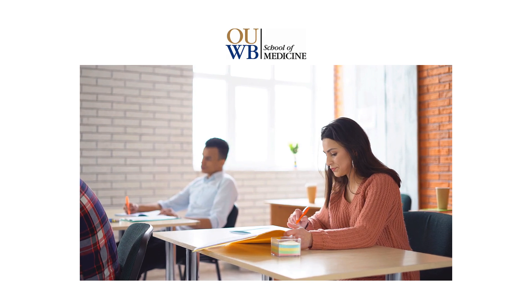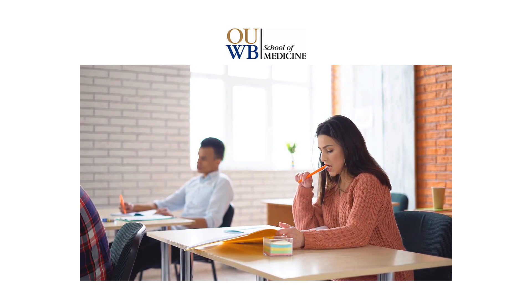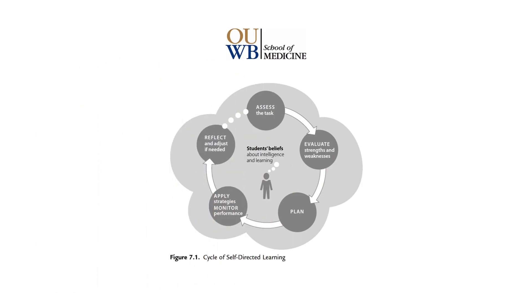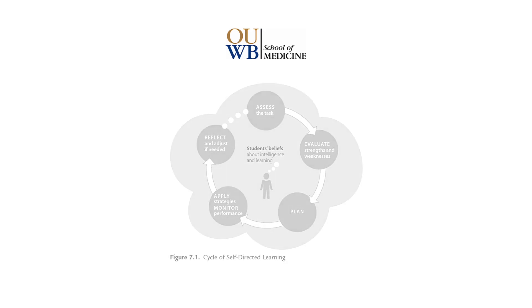While there are a number of research models that outline how students might become self-directed learners, many models agree that students must engage in processes that both monitor and control their learning. The cycle of self-directed learning is conceptualized in figure 7.1 in How Learning Works, with students' beliefs on intelligence and learning being a central component of the model. Much of the chapter focuses on research findings relative to each process in the cycle, as well as how students' beliefs about intelligence and learning impact self-directed learning.